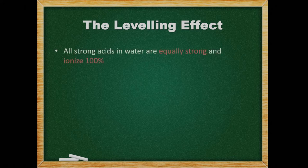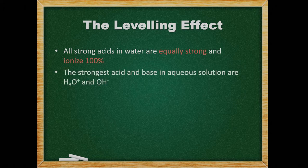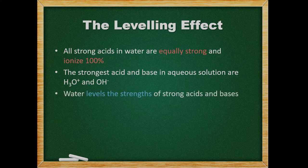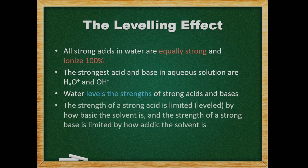According to the Ka table, all strong acids in water are equally strong and ionize 100%. This means that in a solution of strong acid, no molecules of the strong acid remain — only the anion and hydronium remain. This is the same for bases, which dissociate completely to form hydroxide ions. The strongest acid and base in aqueous solutions are hydronium and hydroxide. Any acid that is stronger than hydronium reacts with water to form hydronium, so no acid stronger than hydronium exists in water. Water levels the strengths of strong acids and bases, meaning that the strength of a strong acid is leveled by how basic the solvent is, and the strength of a strong base is leveled by how acidic the solvent is.